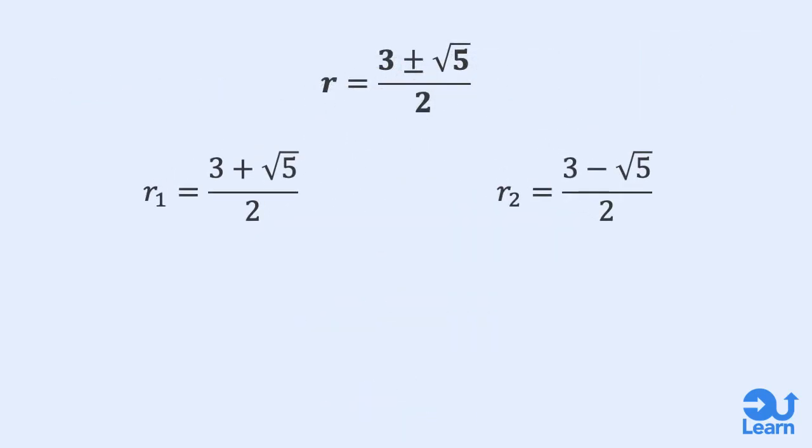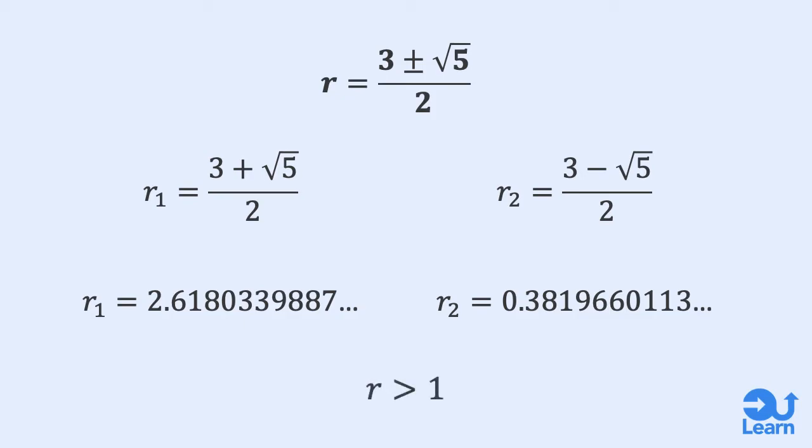Using a calculator, we get these two values. Now remember, our r value must be greater than 1, so our r value is 2.6180339887. However, we'll just leave it in its third form of 3 plus square root 5 over 2.